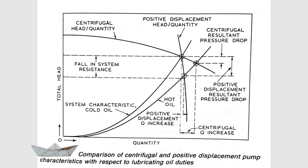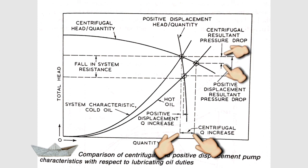Another big advantage is that the centrifugal pump used as a lube oil pump is always located inside the main engine lube oil sump. The pump sits at the bottom, so the lube oil always provides a positive suction head to the pump — that is a big advantage. We only need to maintain a minimum level of lube oil inside the sump. Overall, the centrifugal pump is more efficient, delivers higher flow rate to lubricate engine parts, and has less pressure drop compared to the positive displacement pump.